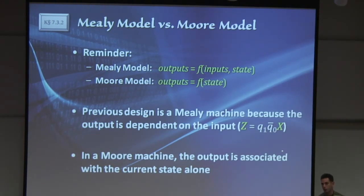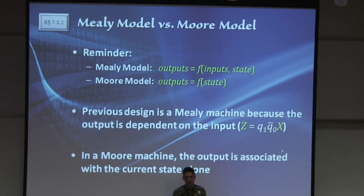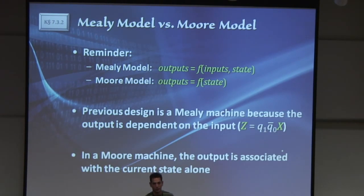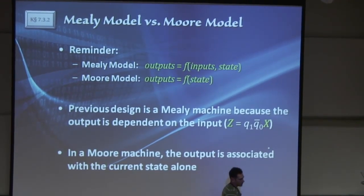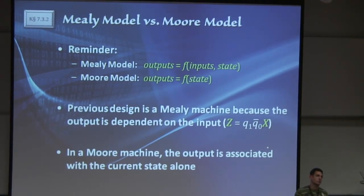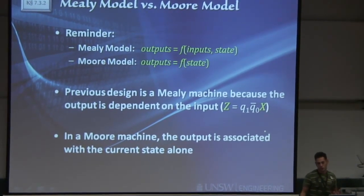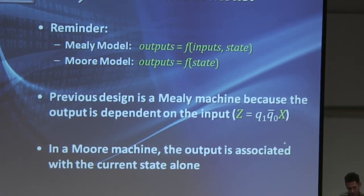In a Moore model, the output will only depend on the current state, which means it will always just be a function of whatever Q outputs from the flip-flops. It will not be dependent on whatever inputs there are. What we'll see today is that you can actually convert between the Mealy model and a Moore model, and I'll teach you how to do it.